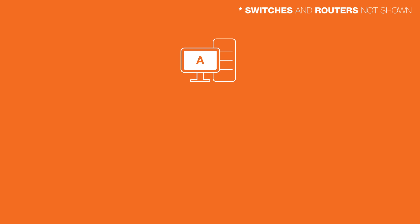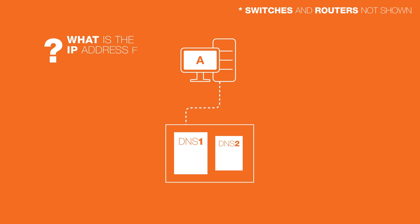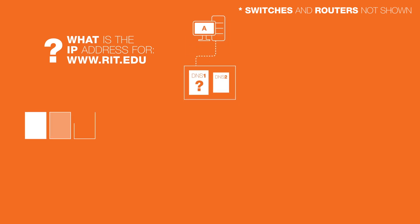Typically, enterprises will have two DNS servers set up for both fault tolerance and load balancing. One will be the client's primary DNS server and will be the first one it asks. In this case, the client asks its DNS server what is the IP address for the machine named www, in the subdomain RIT, in the top-level domain EDU. Assuming nothing is cached, the client's DNS server will not know the answer, and escalates the query to one of the 13 root DNS servers.